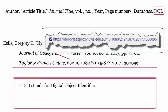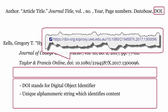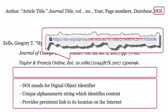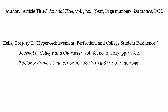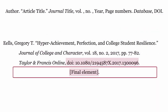DOI: this stands for Digital Object Identifier, which is a unique alphanumeric string which identifies content and provides a persistent link to its location on the internet. The DOI is formatted using DOI in lowercase, colon, then the DOI string. As the DOI is the final element, finish the reference with a full stop.